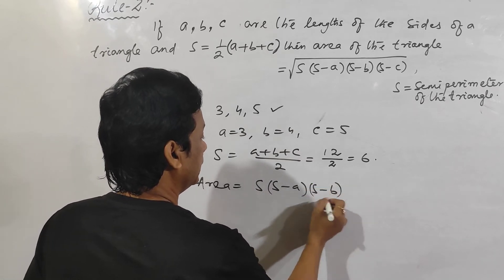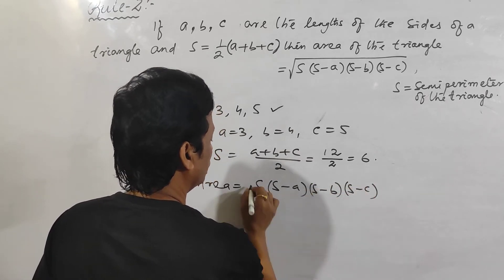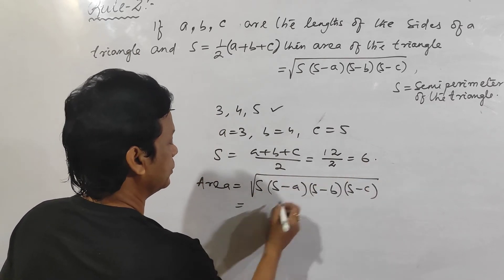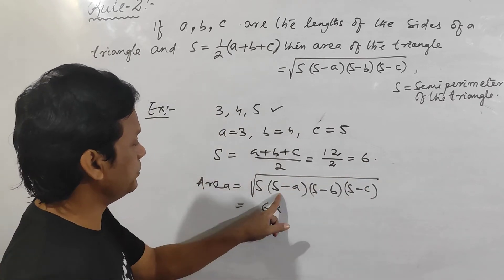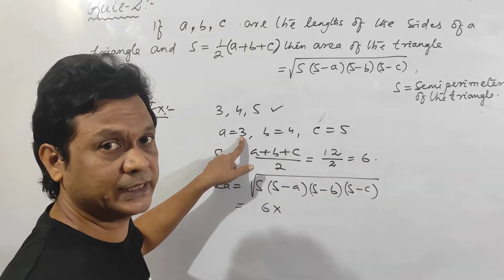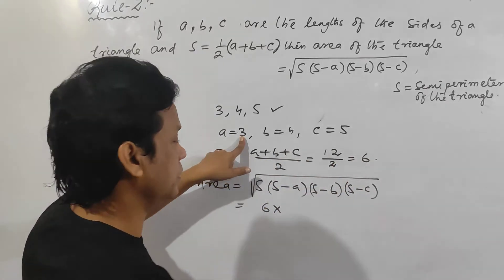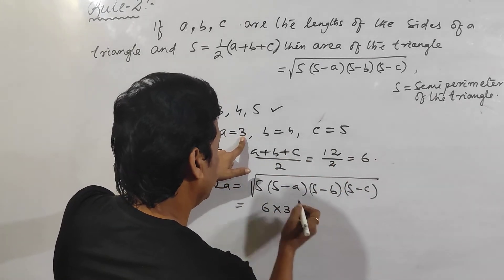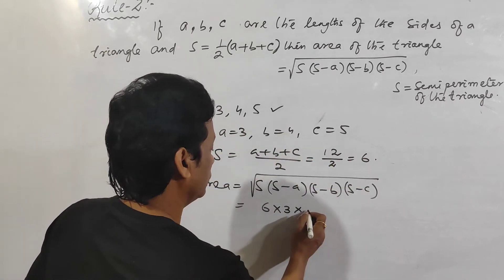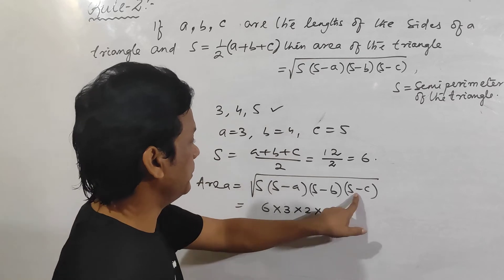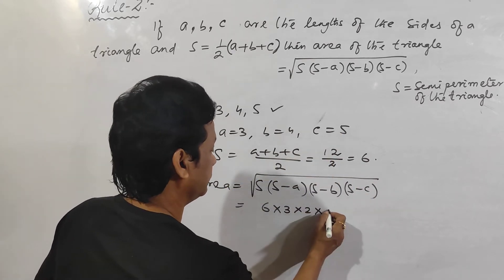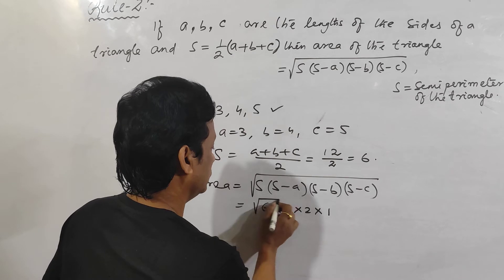So your area is equal to square root of s into (s minus a) into (s minus b) into (s minus c). Here s equals 6. So: s minus a = 6 minus 3 = 3, s minus b = 6 minus 4 = 2, and s minus c = 6 minus 5 = 1.